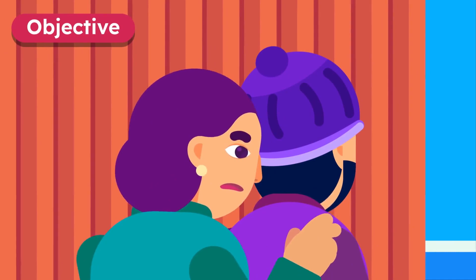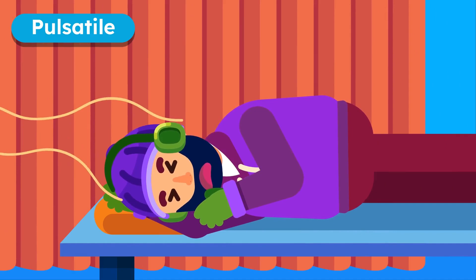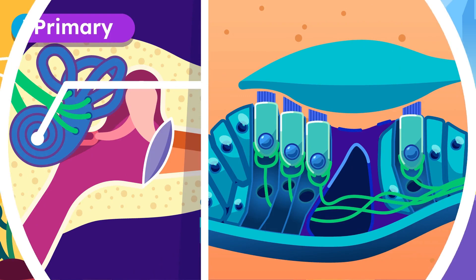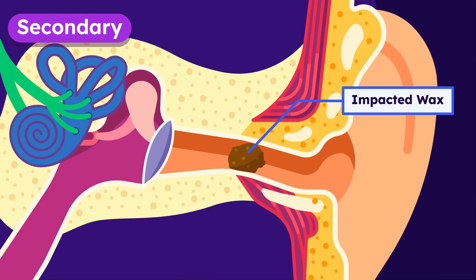Pulsatile, when the sound follows a steady pattern. Or non-pulsatile, when it appears randomly. Primary tinnitus is caused by hearing loss, while secondary tinnitus has a specific known cause.